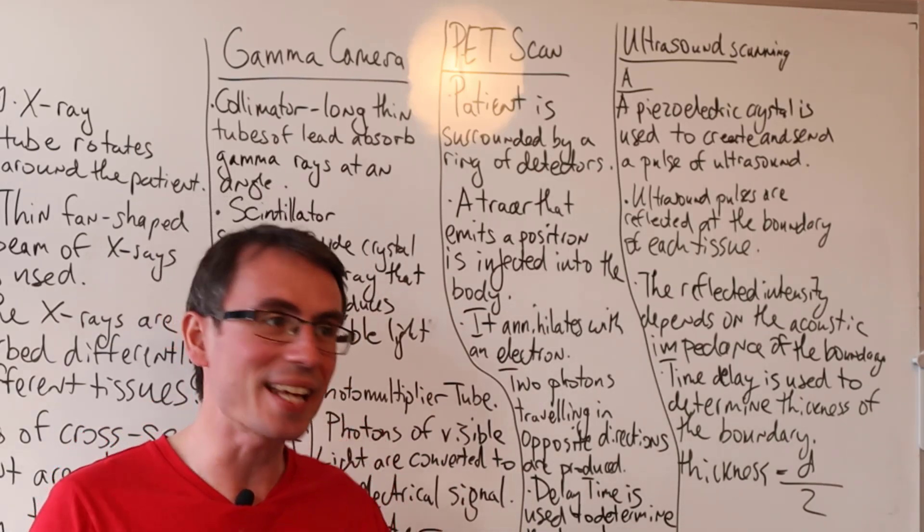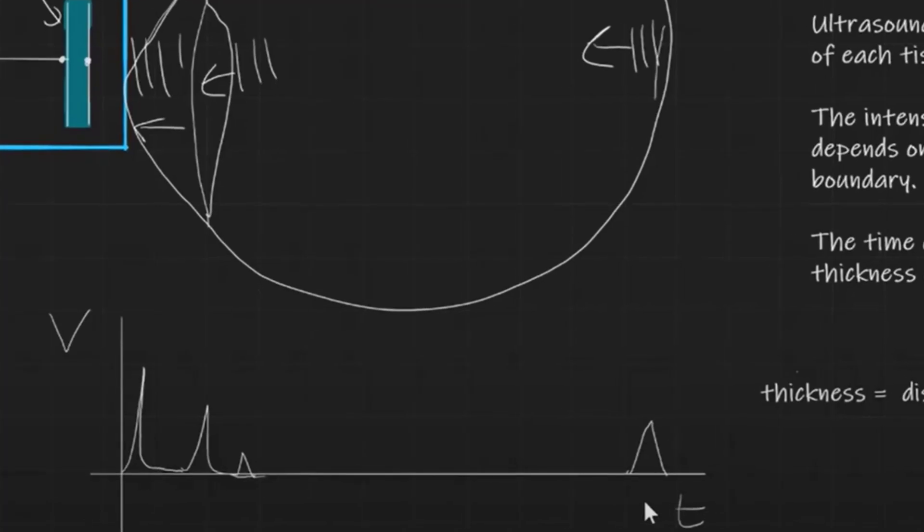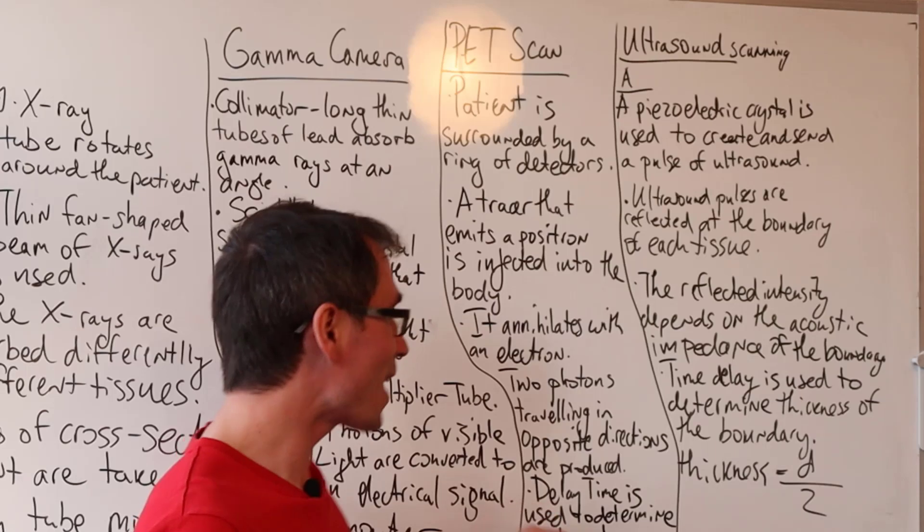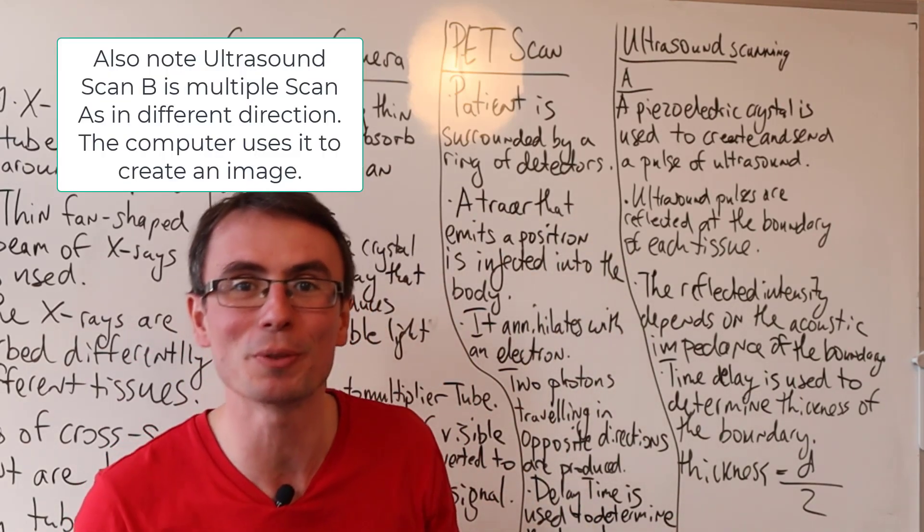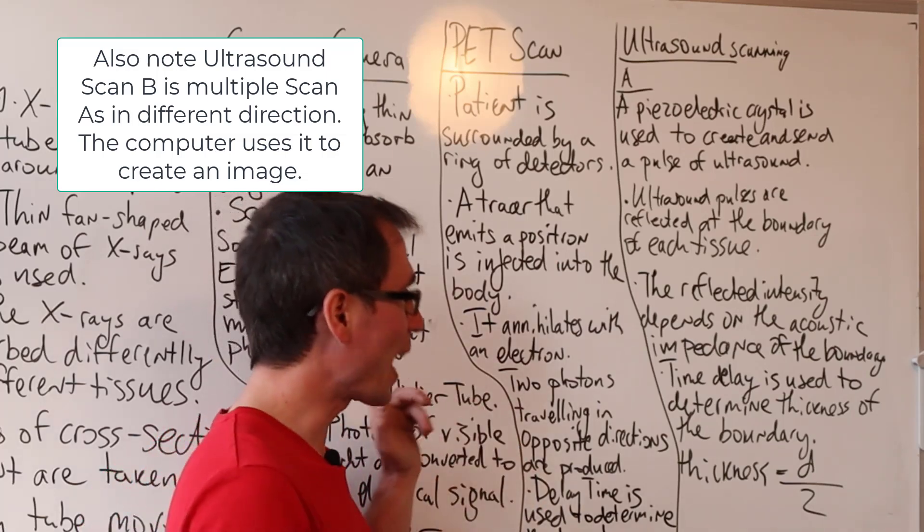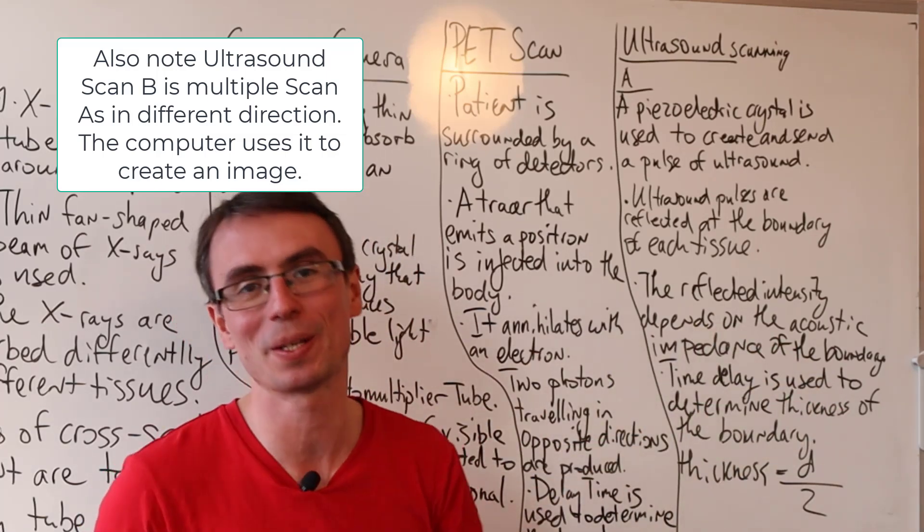In an ultrasound scan A, you would have a graph of essentially voltage against time. Bear in mind that the thickness of the tissue will be the distance traveled divided by two because the ultrasound pulse has to go there and then return backwards.